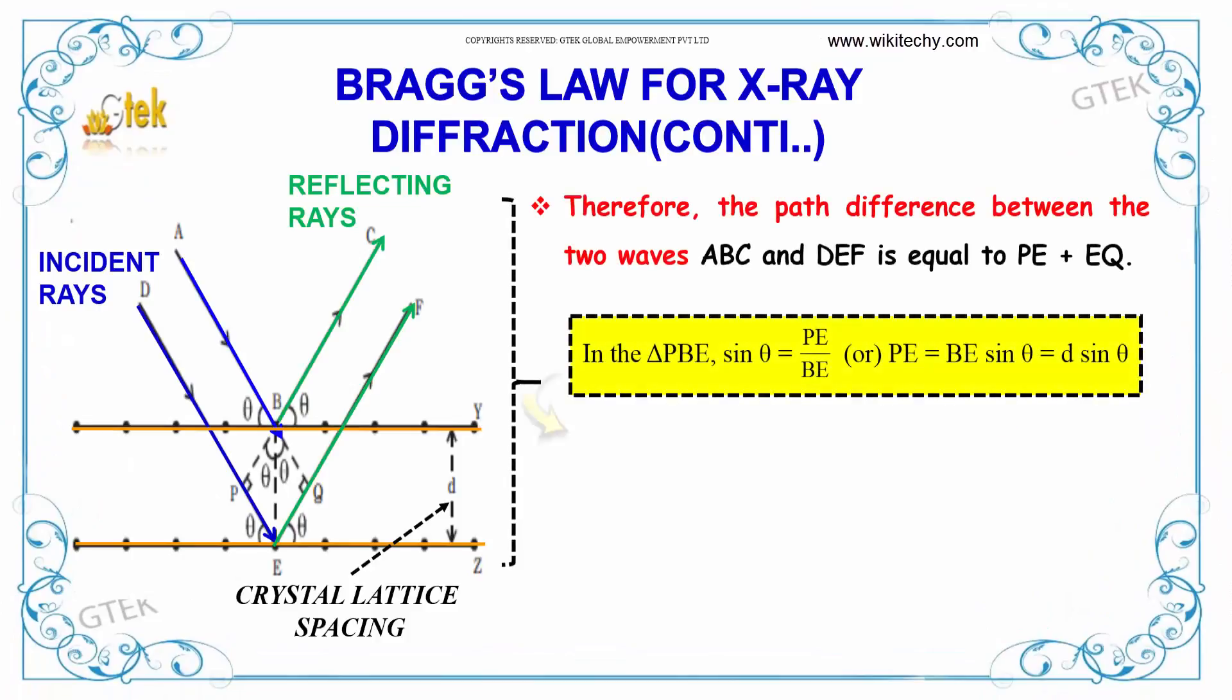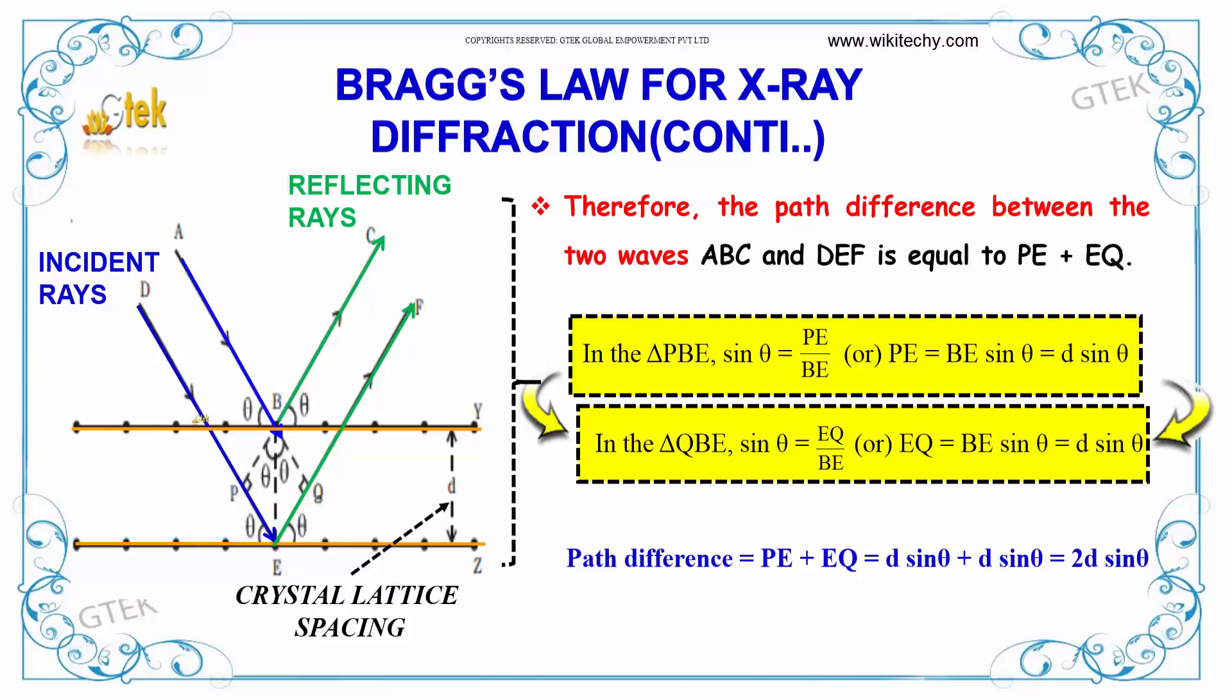Therefore, the path difference between two waves A-B-C and D-E-F is equal to P-E plus B-Q. In the triangle P-E-B, sin theta is equal to P-E divided by B-E, or P-E is equal to B-E into sin theta.